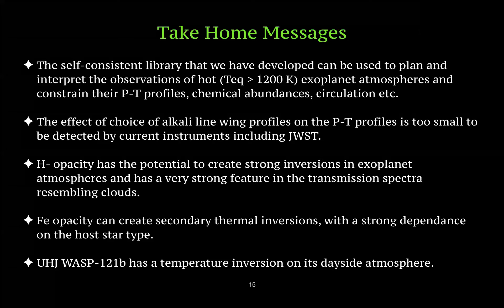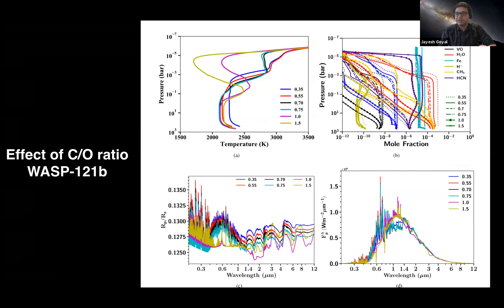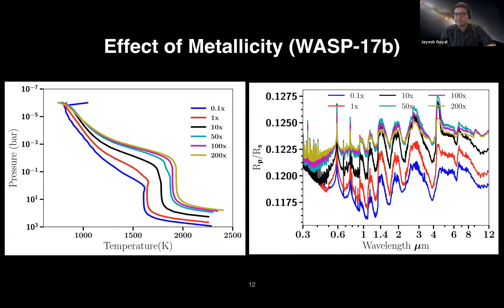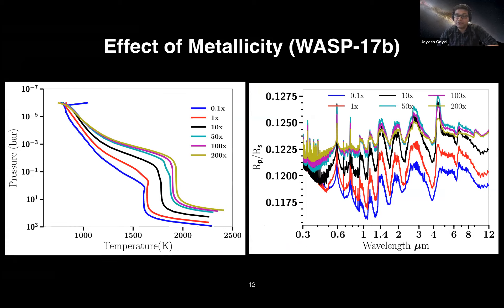The grids are totally publicly available — links are in the paper, both on Google Drive and on a server. The download includes all PT profiles, chemistry, transmission spectra, emission spectra, and contribution functions. If you are modeling a specific planet, you can contact us and we'll try to accommodate, since JWST proposals are on the horizon and many people are rushing to modelers.